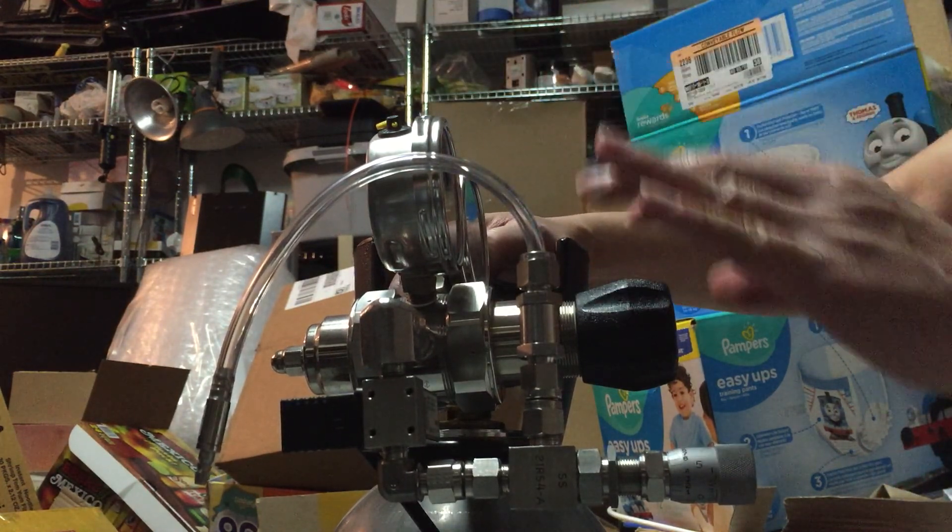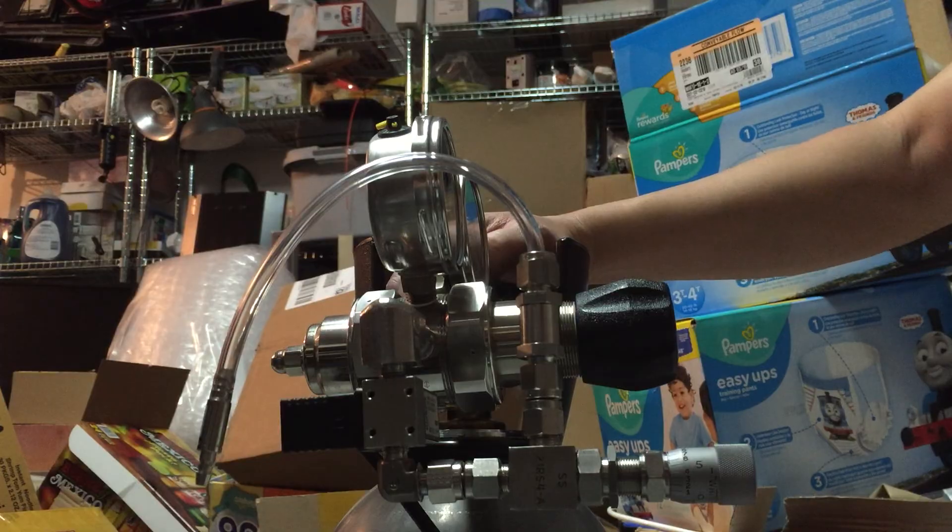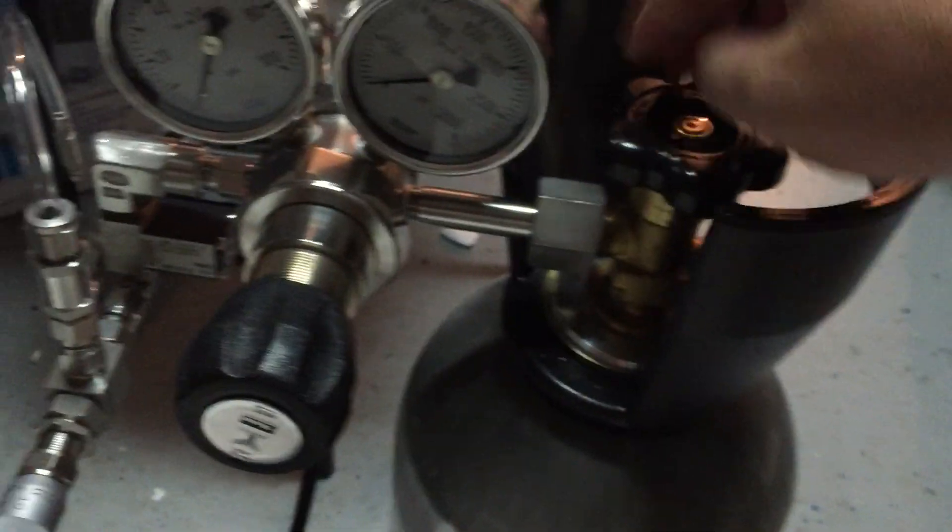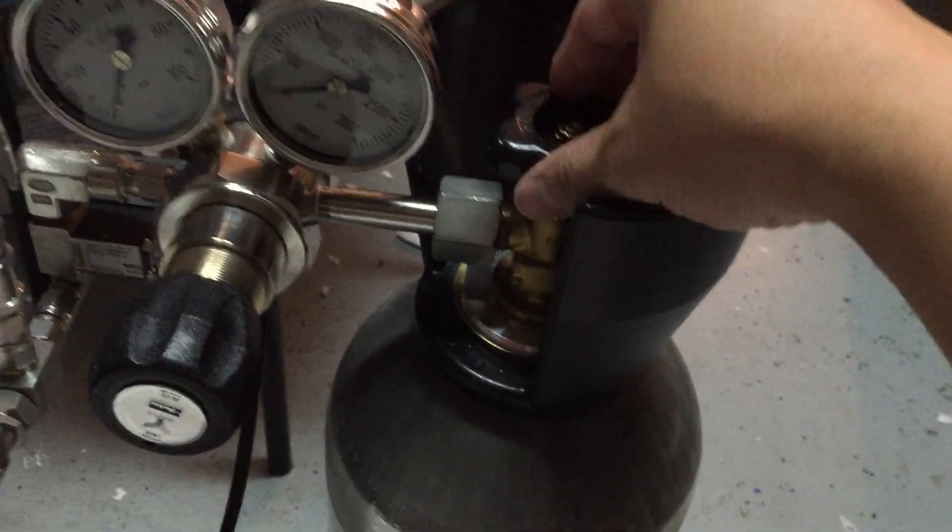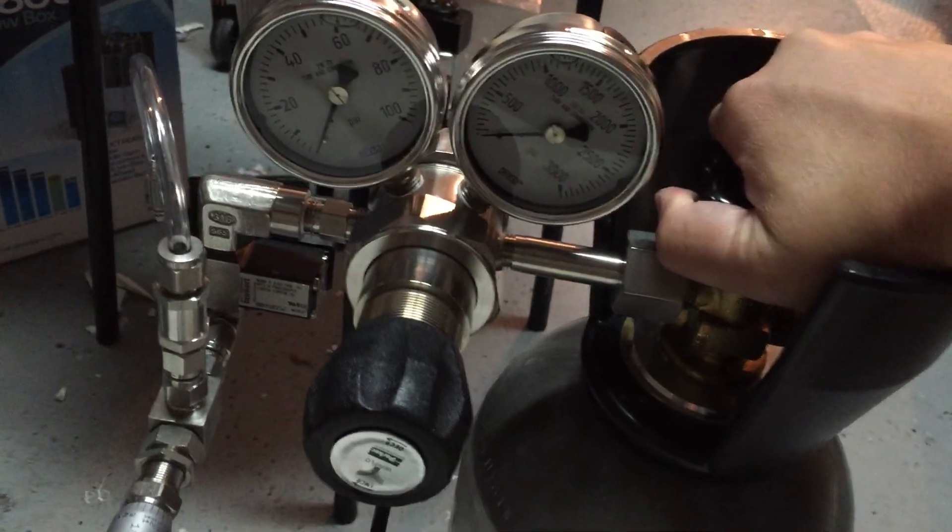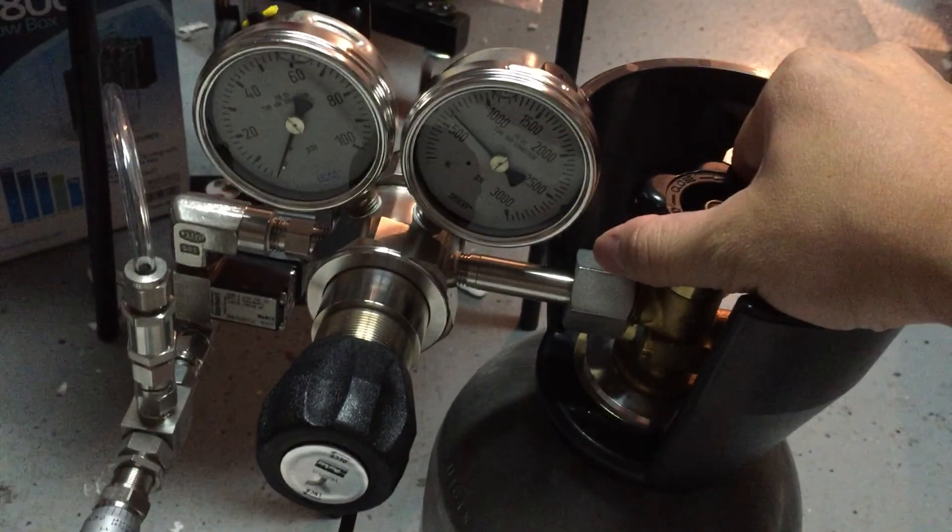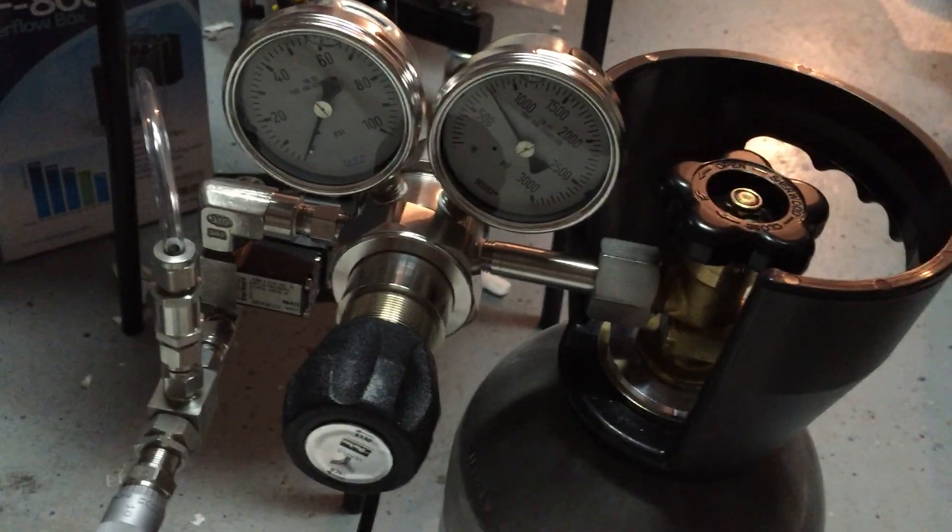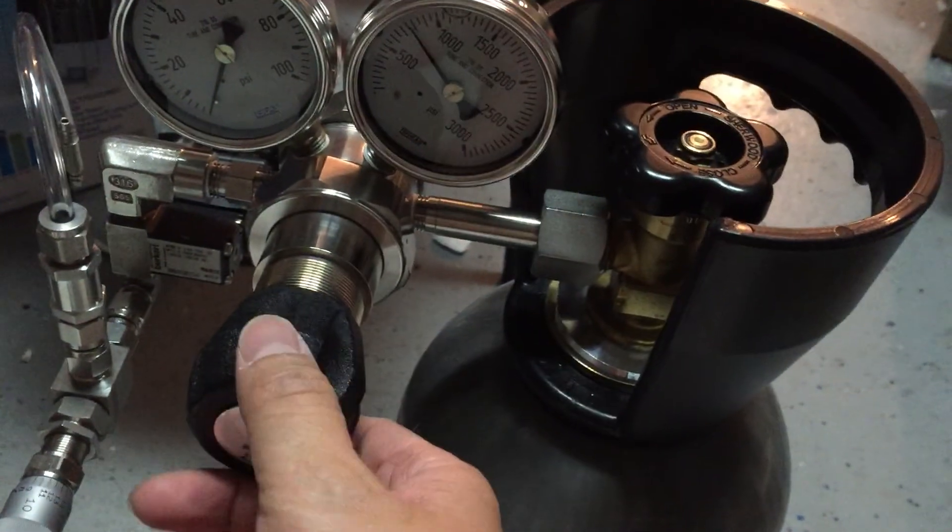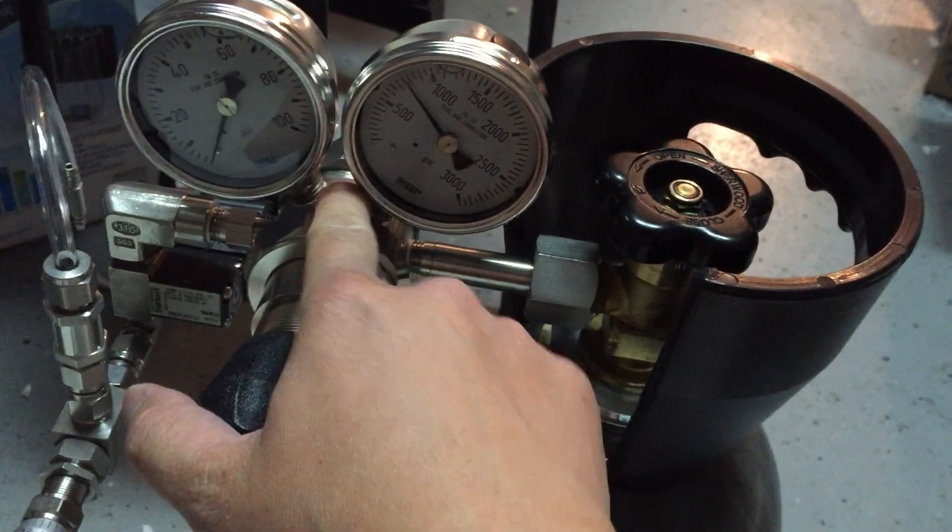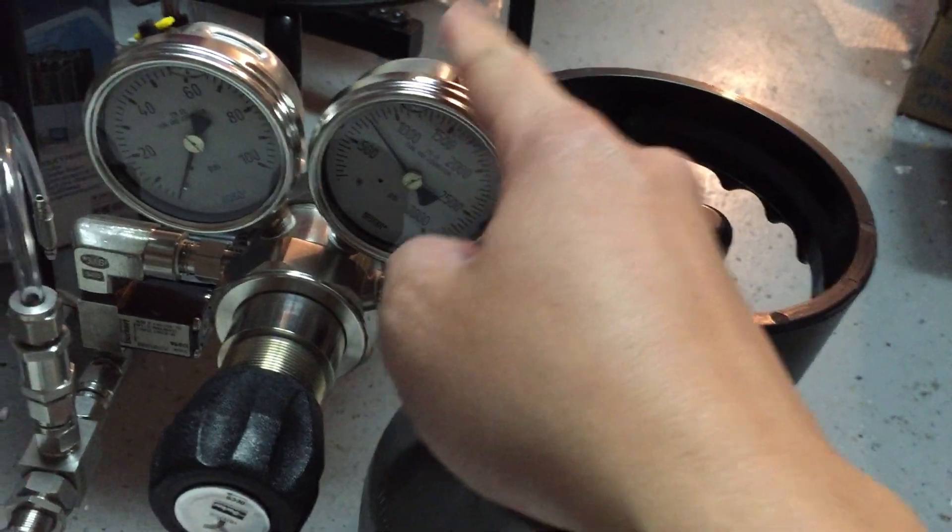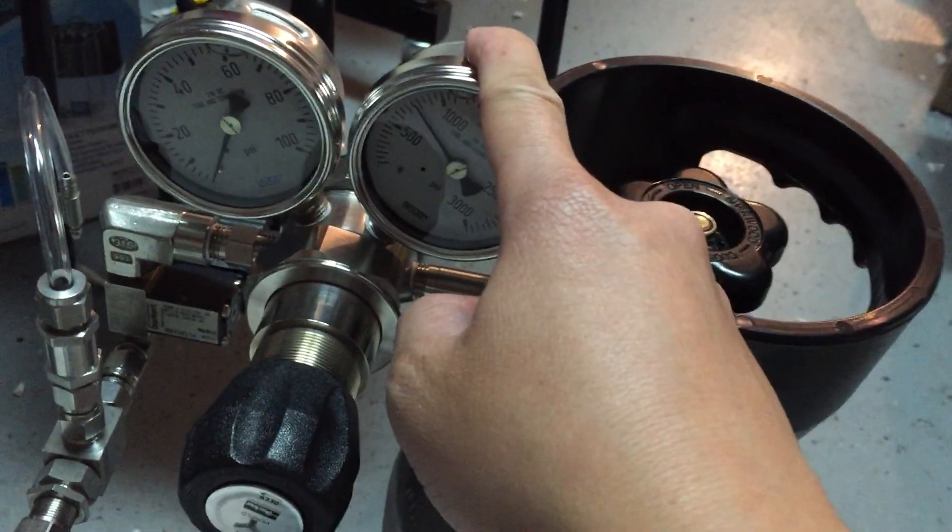So now the regulator is attached to the tank. The next thing you want to do is turn on the tank valve. So now you turn it on. Now it's reading, a full tank should read about 800 psi. So you have to set the second stage close. So now you only see this. The CO2 is in the first stage.